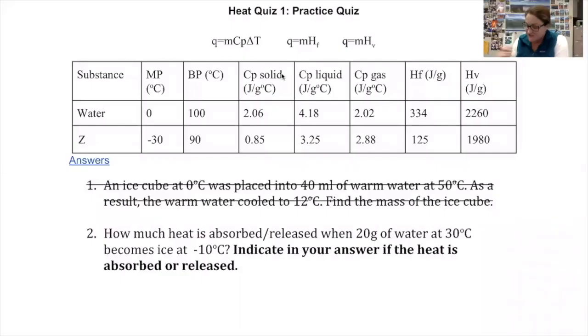All right, we have three formulas here that we use at different times for different reasons. We use the first one anytime we have a change in temperature. We use the second one, q equals mass times heat of fusion, anytime we have a phase change at the melting point. And we use the third one for a phase change at the boiling point.